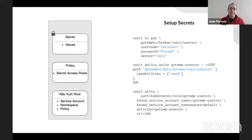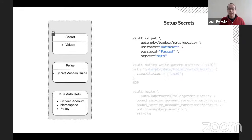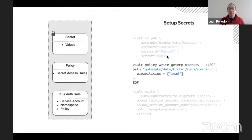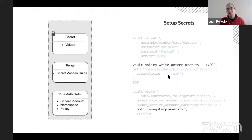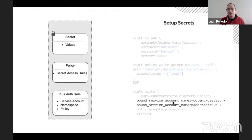Now let's talk about our secrets. The first thing we need to do is create actual secrets — in this case the NATS credentials for our user service. Then we'll create a policy that will allow us to read the secrets we just created. And finally, we'll create a role for our Kubernetes authentication called GoTypeUserService that will use the GoTypeUserService policy, allowing us to read our credentials. That role will also communicate with Kubernetes for services running with a particular service account name — GoTypeUserService — in the default namespace.